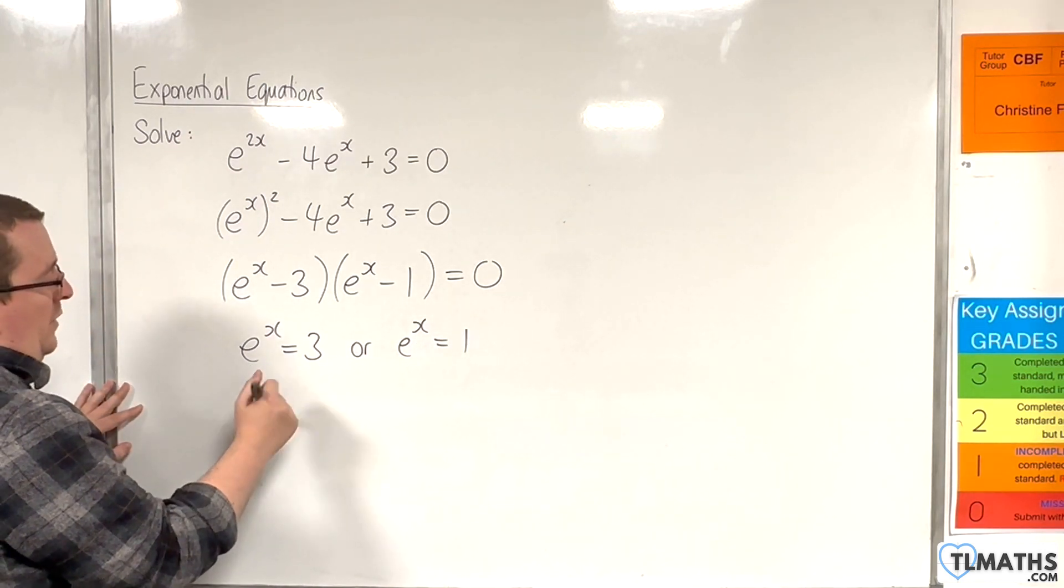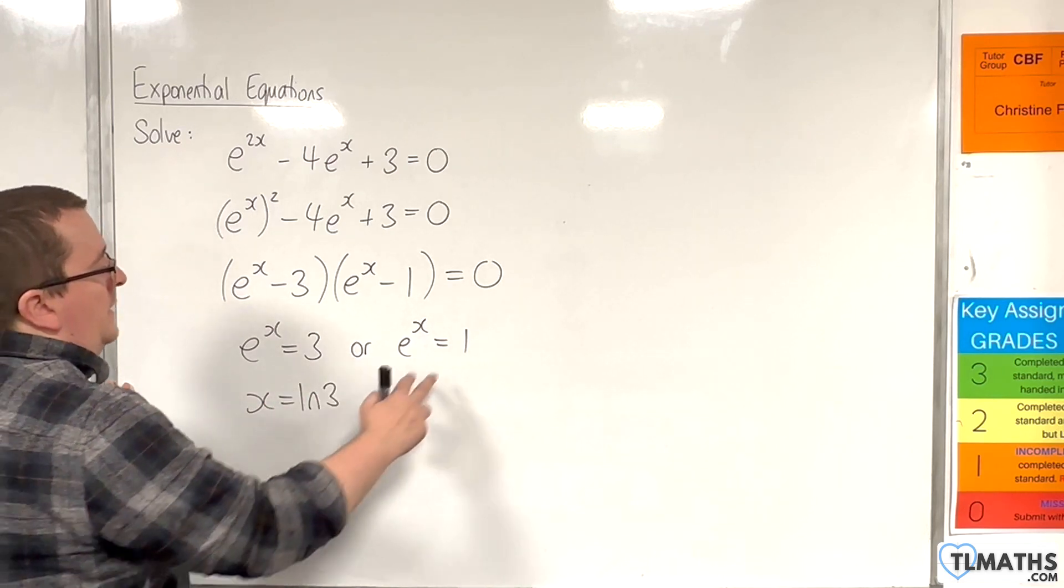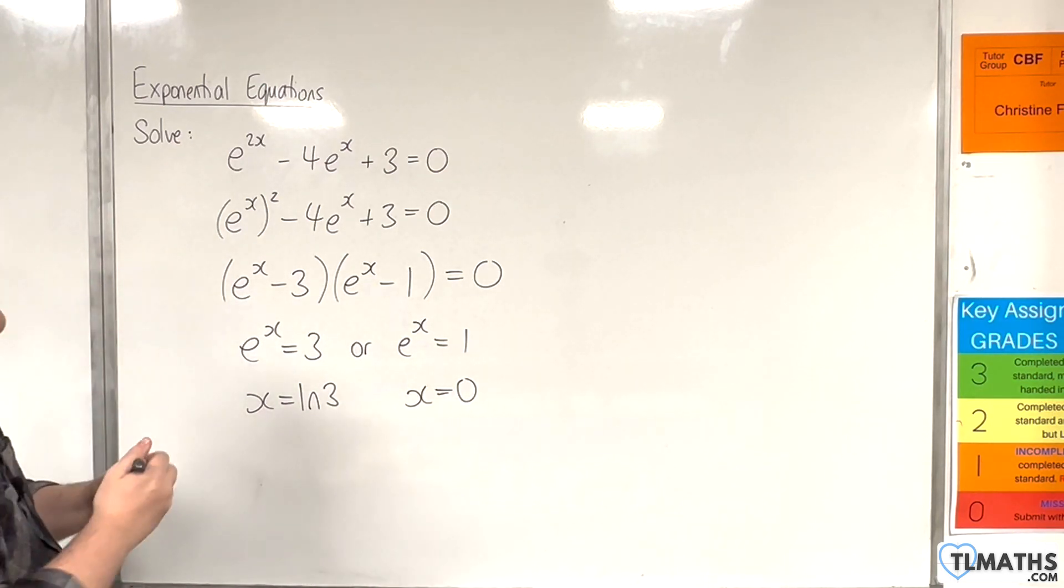So this has the solution x equals the natural log of 3. And this has the solution x is equal to 0. So there are two solutions to the original equation.